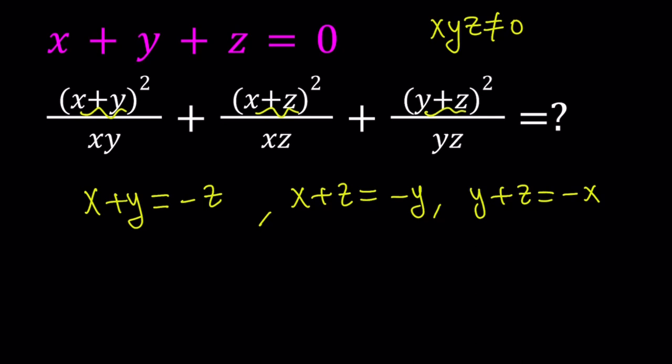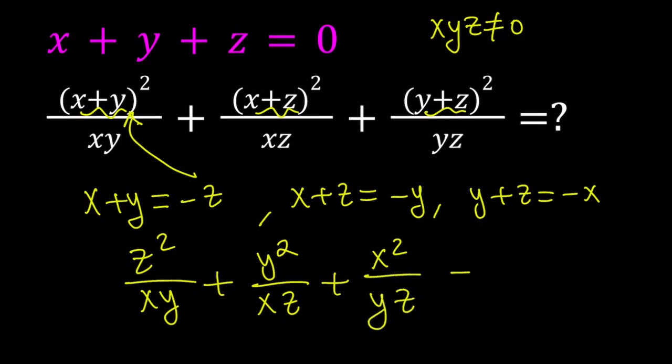But you're going to square, for example, if you replace x plus y with negative z, you're going to square negative z, which is going to give you z squared. So, instead of negative z in parentheses squared, allow me to write just z squared. So, this becomes z squared over xy plus y squared over xz plus x squared over yz. This is what we're trying to evaluate.